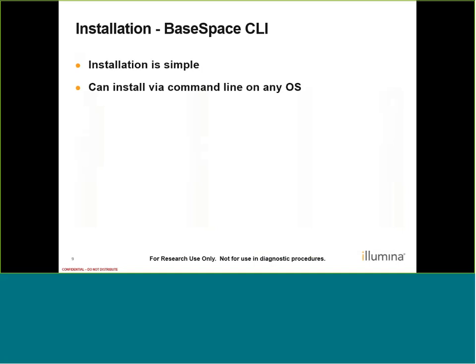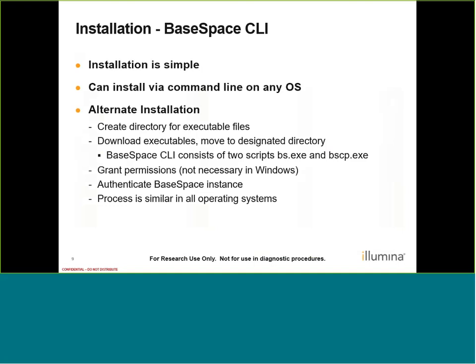If you do not have one of these packages available or pre-installed, we do have an alternative installation method. In this method, we would create our directory for our CLI executable files, then download the executables and move those files to the designated directory. BaseSpace CLI consists of two scripts: BS and BSCP. Most functionality is accomplished with the BS script, but having BSCP is also helpful. Once we have our scripts in our designated directory, we'll need to grant permissions — this is your standard chmod type of step. Note that this is not actually necessary to do in Windows.